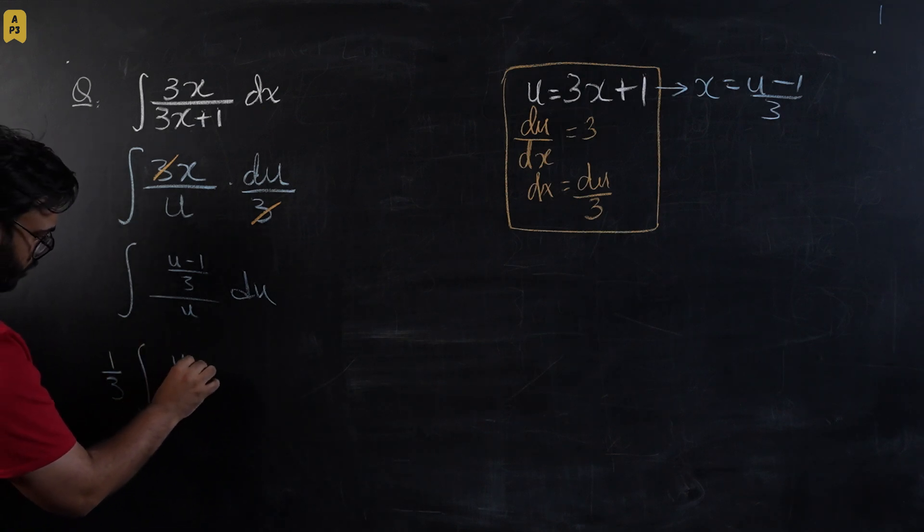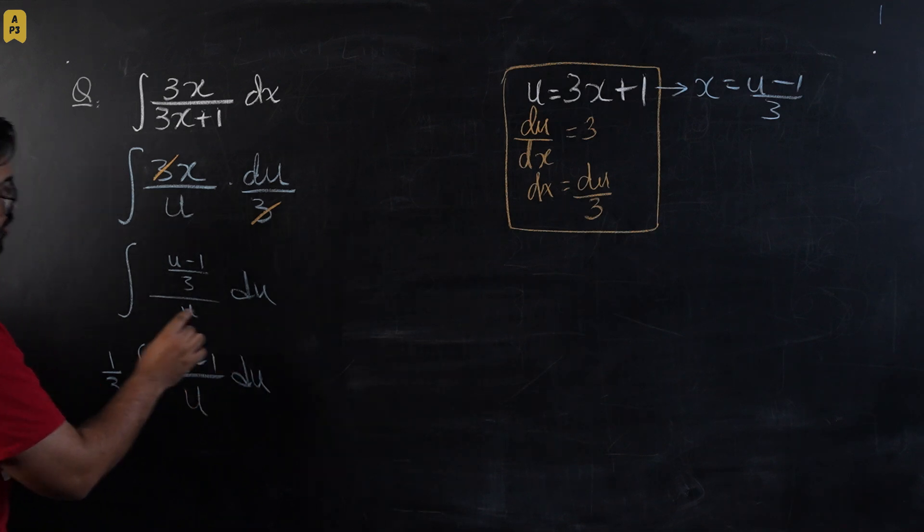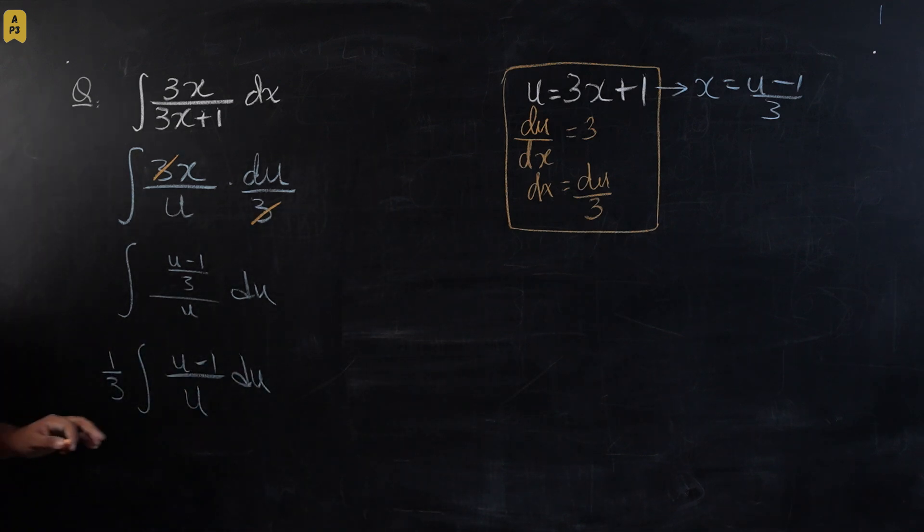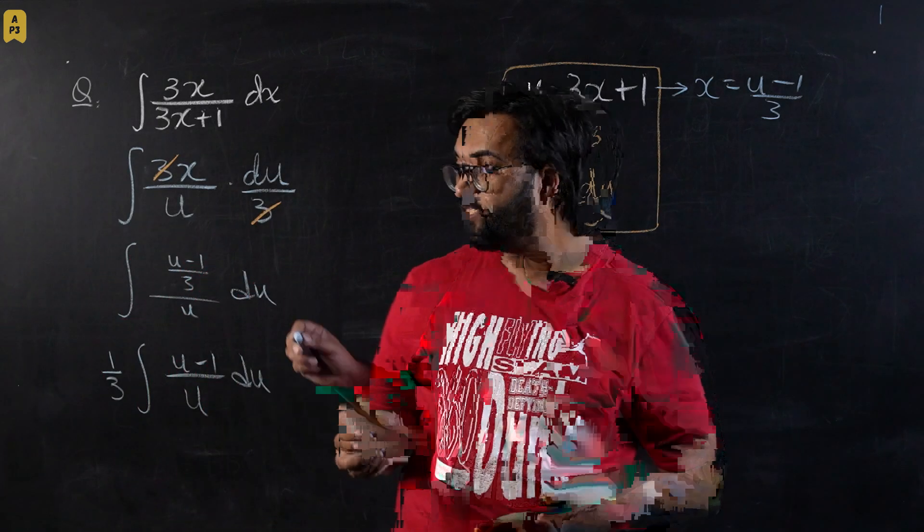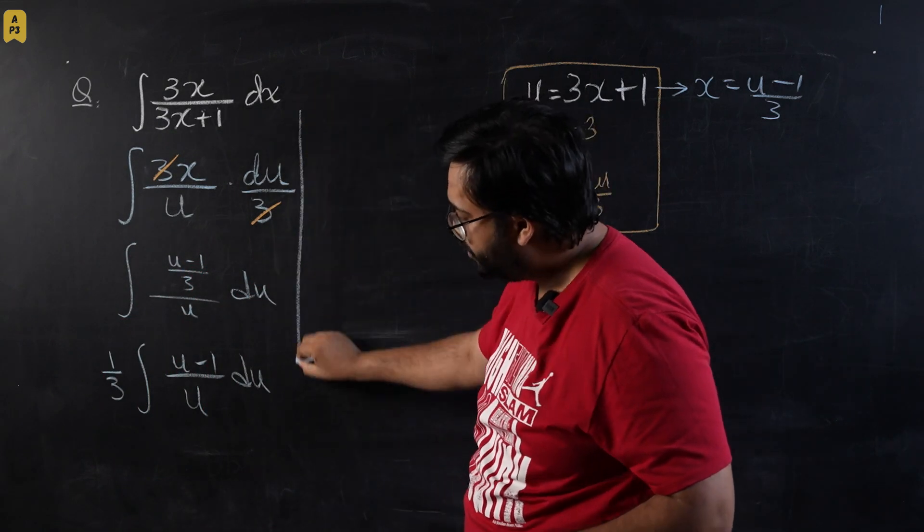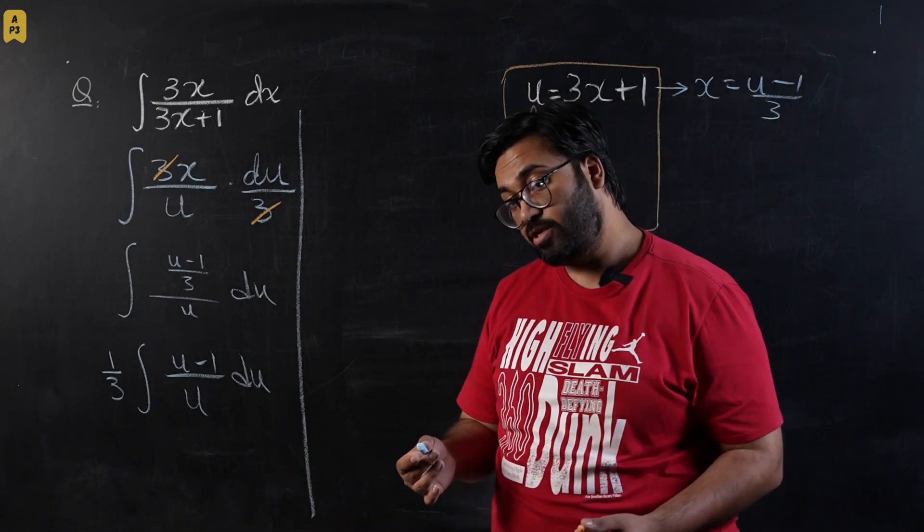And we will have u minus 1 upon u du. As you guys can see, there are no limits to this. This is a successful substitution and now we're going to try to integrate this portion. Now I've seen many students struggle with this portion because they are trying to think about something really difficult. This is actually not the case.